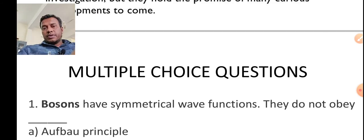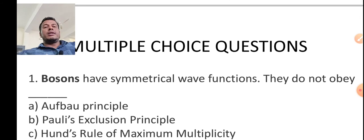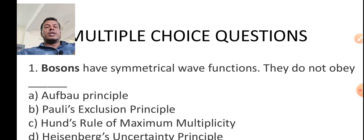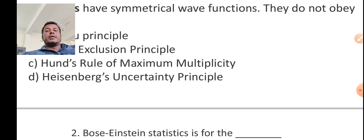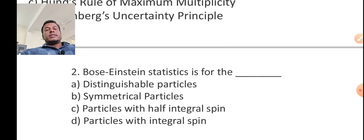This session will now end. Let us check: Bosons have symmetrical wave functions. They do not obey Pauli exclusion principle, Hund's rule, or Heisenberg uncertainty principle. Usually Bosons have symmetrical wave functions and the Pauli exclusion principle does not apply. Bose-Einstein statistics is for symmetrical particles.